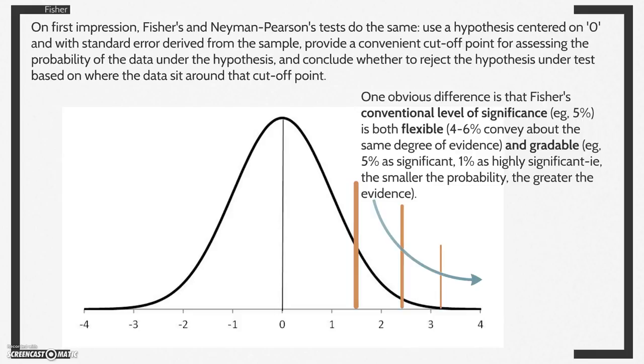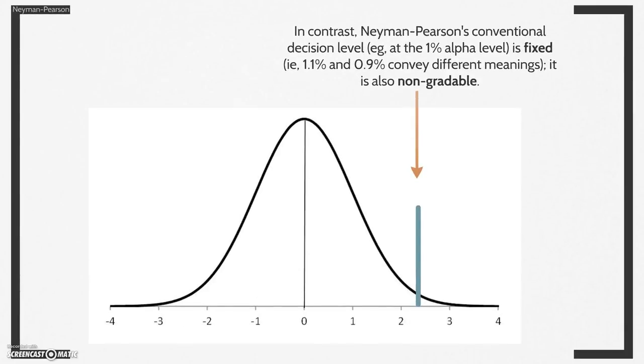One obvious difference is that Fisher's conventional level of significance, for example 5%, is both flexible (4% or 6% conveys about the same degrees of evidence) and gradable. For example, we take 5% as significant and 1% as highly significant. That is, the smaller the probability you get, the greater the evidence.